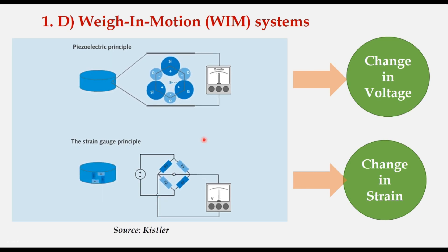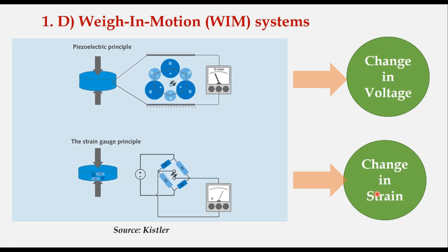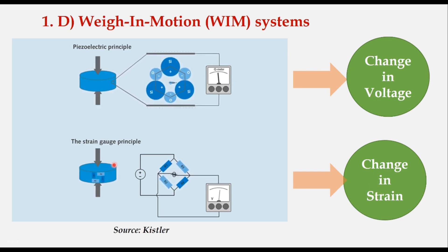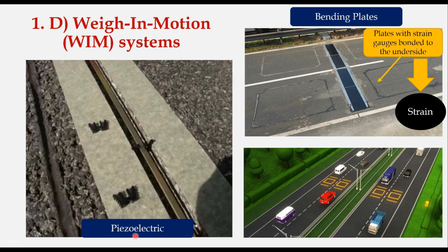The weigh-in-motion system is also used to count or measure the weight of vehicles. It can be based on change in voltage — based on piezoelectric principle — or based on change in strain, which is based on strain gauge or bending beam principle. Piezoelectric sensors collect data by converting mechanical energy into electric energy. The sensor is mounted in a groove cut into the road's surface; when a car drives over it, it squeezes and causes electric potential creating a voltage signal. In case of bending plate, it contains strain gauges that weigh the axles of passing vehicles based on the strain created, and this strain is converted into traffic count data using calibration parameters.